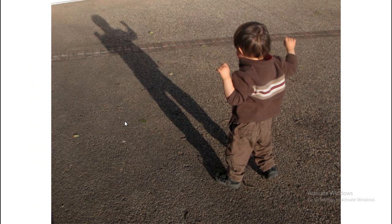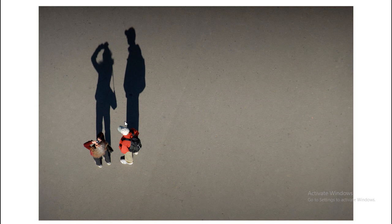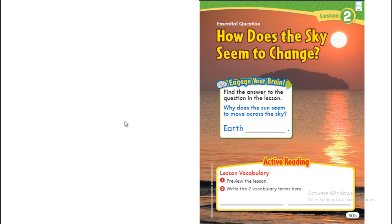In the morning or in the afternoon you're going to see that the shadow gets longer — very long, sometimes so tall you might think it's a giant person on the floor. Open page 305: how does the sky seem to change? Why does the Sun seem to move across the sky? It seems to move but it's not moving — the Earth is spinning around itself. Our vocabulary for this lesson includes the word shadow.